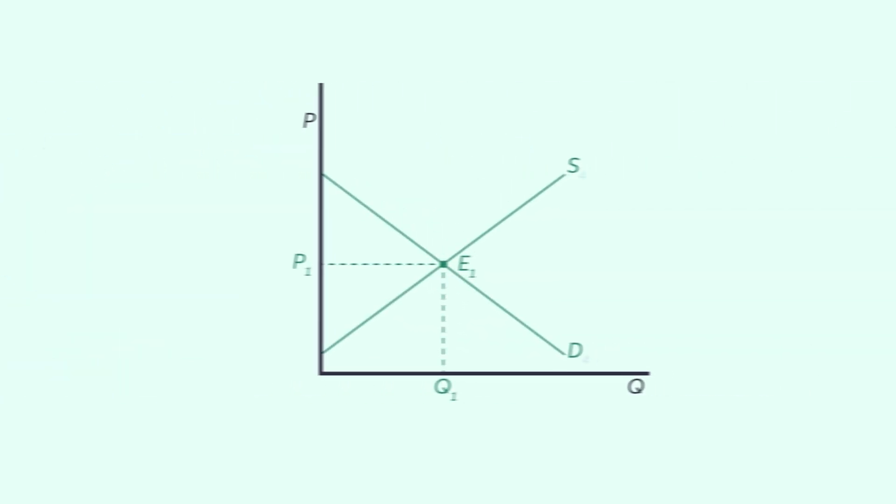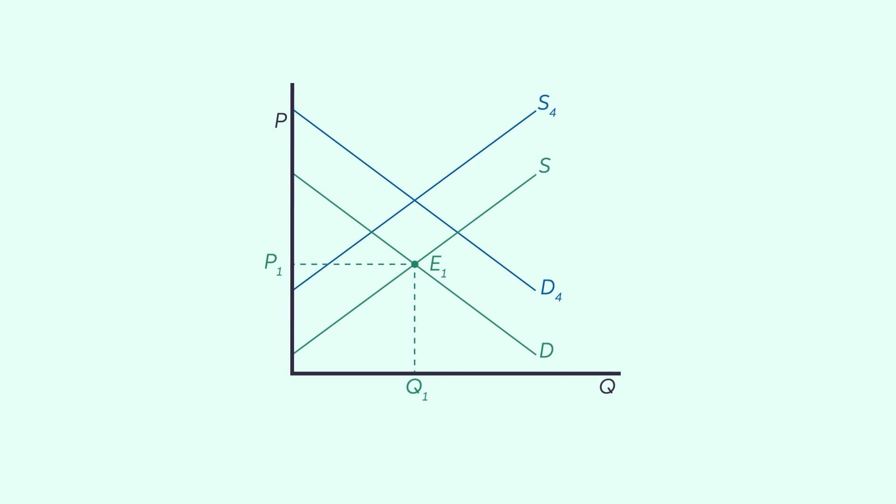In the final graph, let's shift supply and demand in the same magnitude. And notice it is possible to have a change in the equilibrium price, in this case higher, but no change in equilibrium quantity.